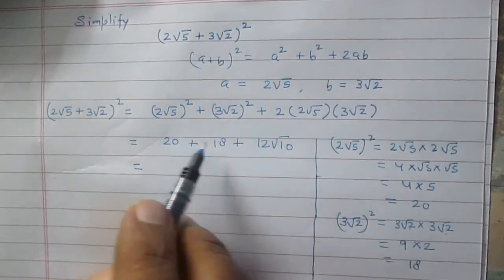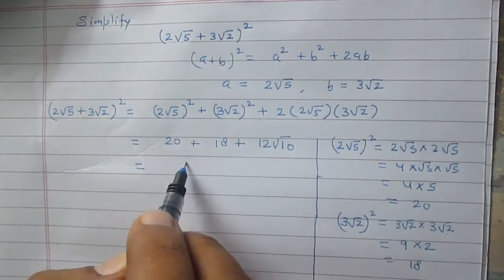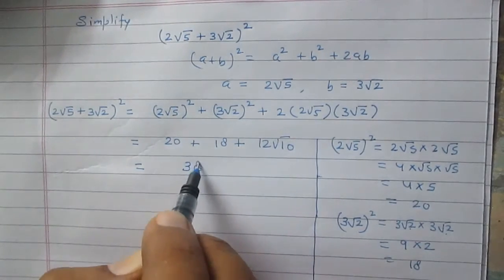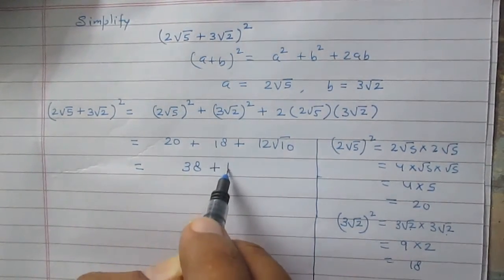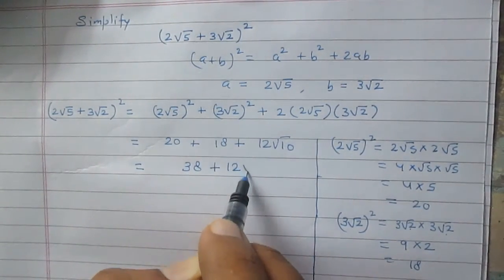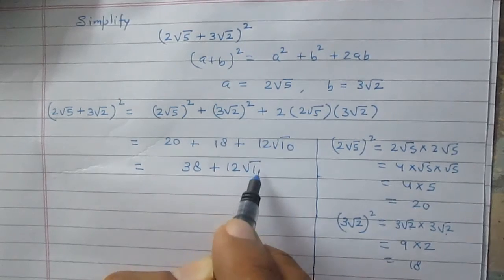Now, 20 plus 18 is 38. The next term is 12√10. So the final answer is 38 + 12√10.